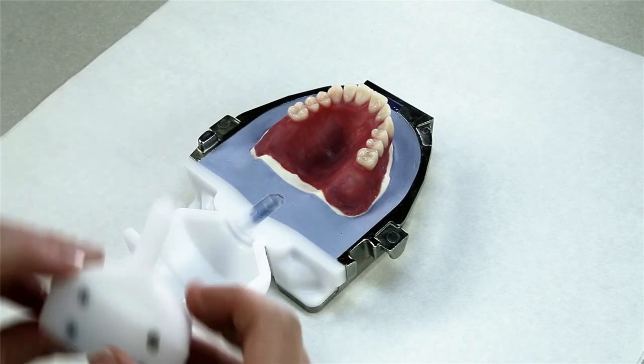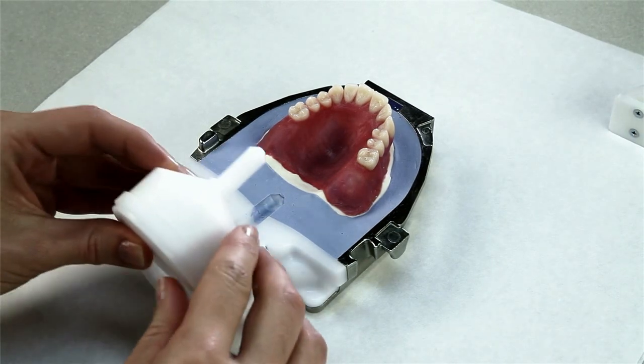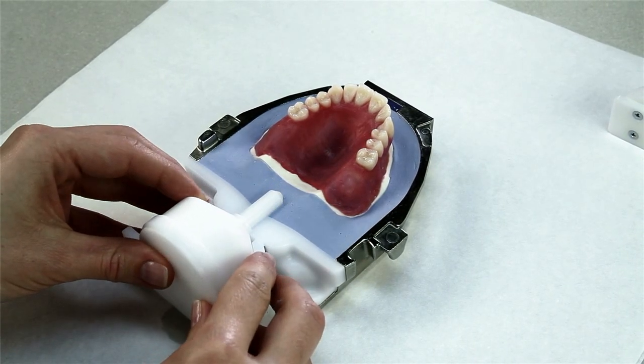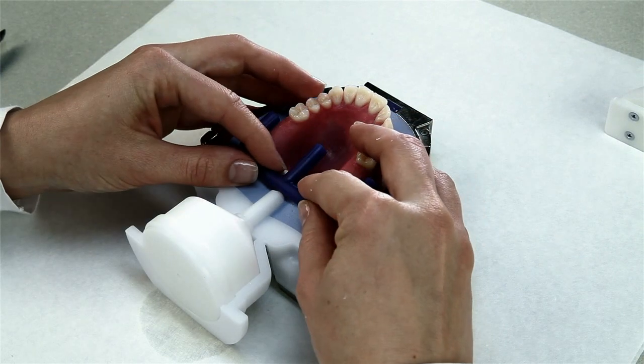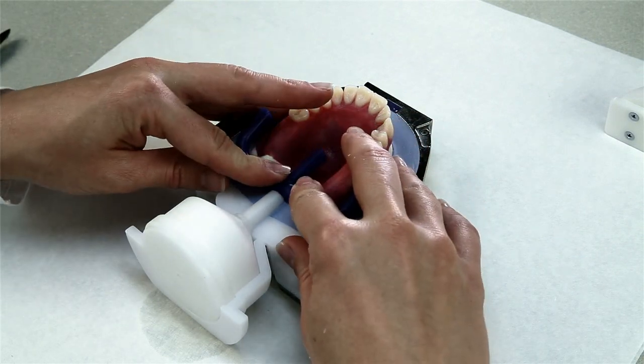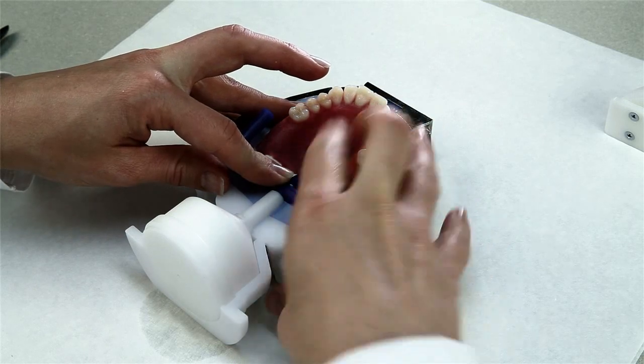Once the stone has completely set, replace the excess former half with the excess former full. The injection wax component may now be pressed over the conical tip of the excess former and to the stone surface.